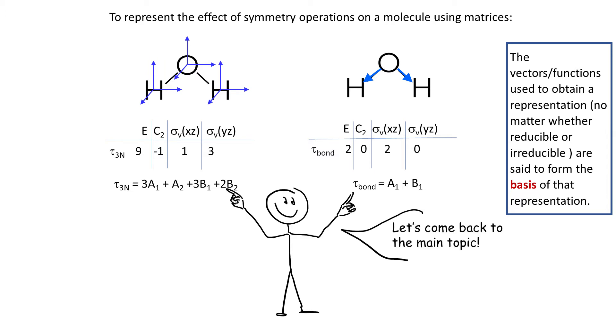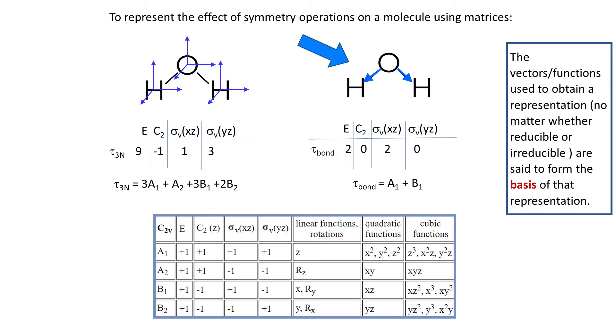Reducible representations are broken down to the irreducible representations. So let's take the example where we place vectors along the bonds. We get a reducible representation Γbond. For the moment don't worry how we get that. And so if you add up A1 and B1 together, we get 1 plus 1 equals 2, 1 minus 1 equals 0, 1 plus 1 equals 2, and 1 minus 1 equals 0. So that is Γbond.